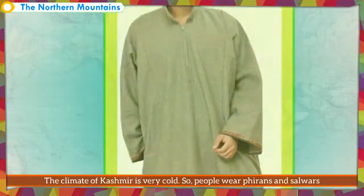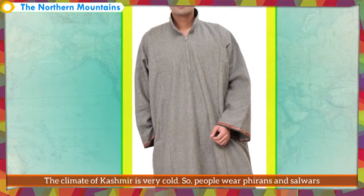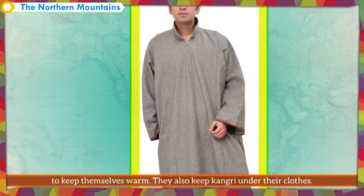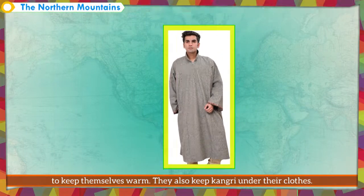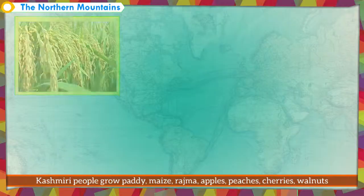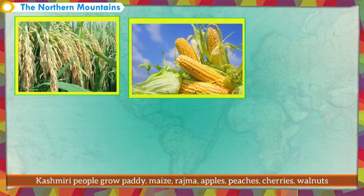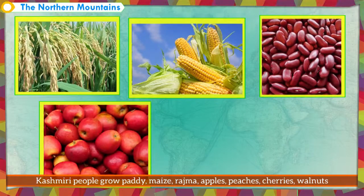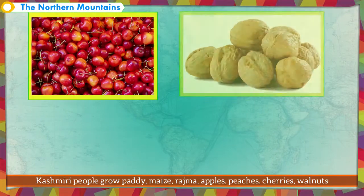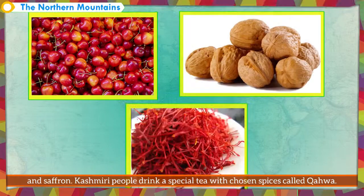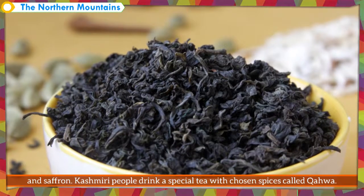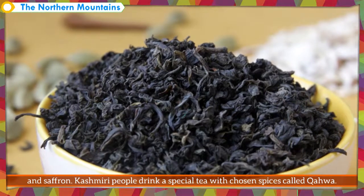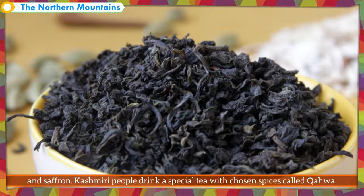The climate of Kashmir is very cold, so people wear firans and salwars to keep themselves warm. They also keep kangri under their clothes. Kashmiri people grow paddy, maize, rajma, apples, peaches, cherries, walnuts and saffron. Kashmiri people drink a special tea with chosen spices called kahwa.